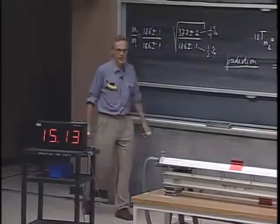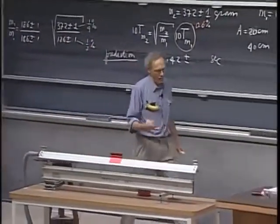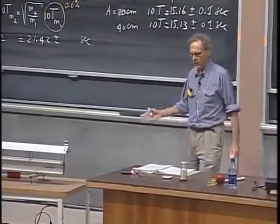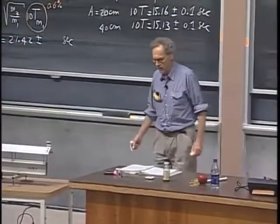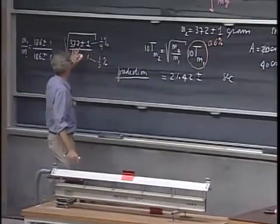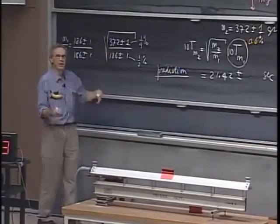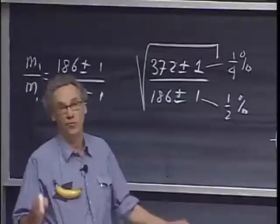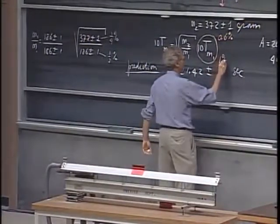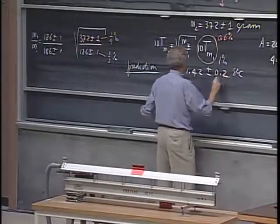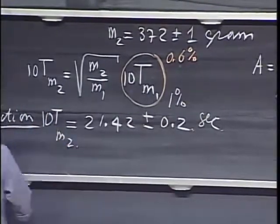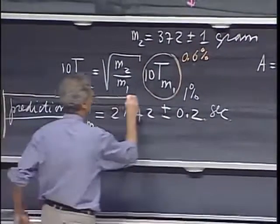So I will not battle you with that, I will not hold you responsible for that, but it turns out that if you do it correctly and you take the error of this into account of about 0.6%, that the error in this ratio is really much less than 0.2%. You can almost forget about it. I will allow generously for a one percent error in the final answer, and so I stick to my prediction that the ten T of double the mass is going to be like this.